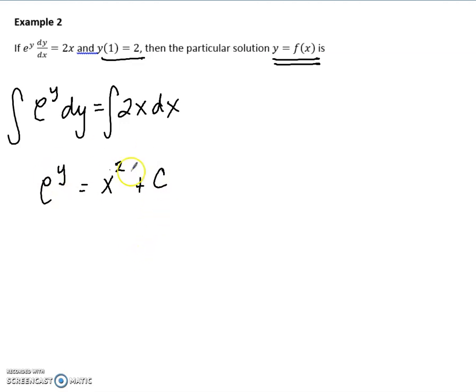We need to now figure out what our c value is. So we're going to plug in our point. We have 2 for my y value and 1 for my x value. So I get e squared. I'll bring this one over equals c.